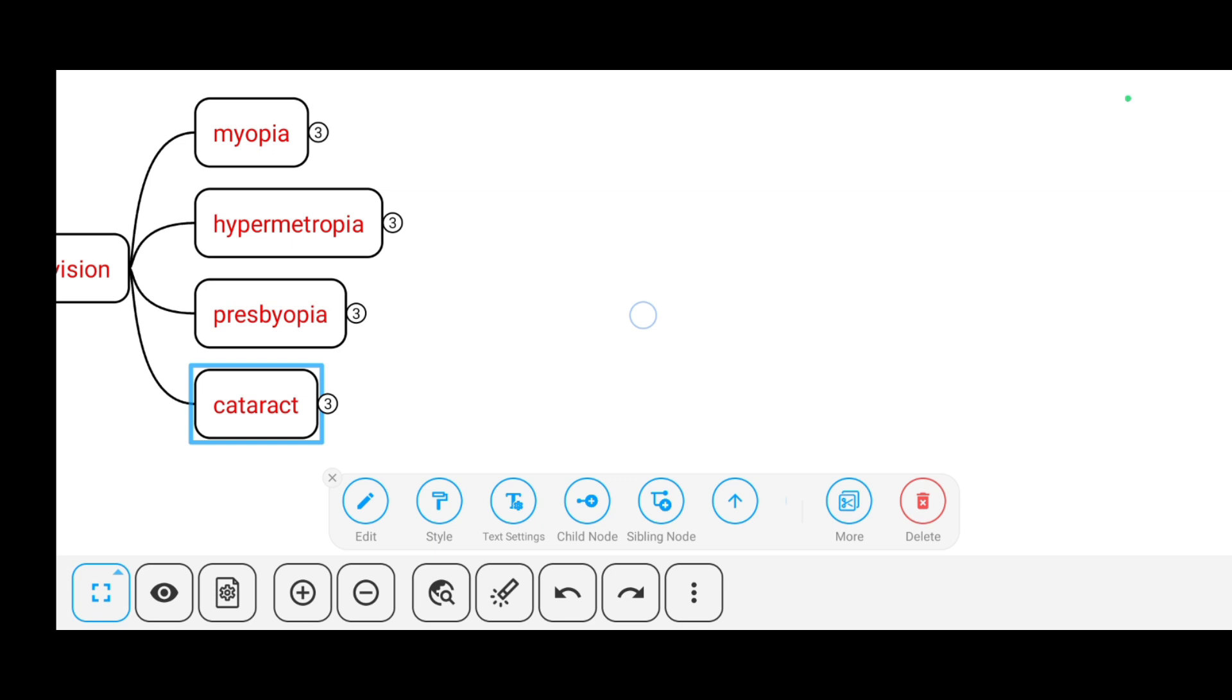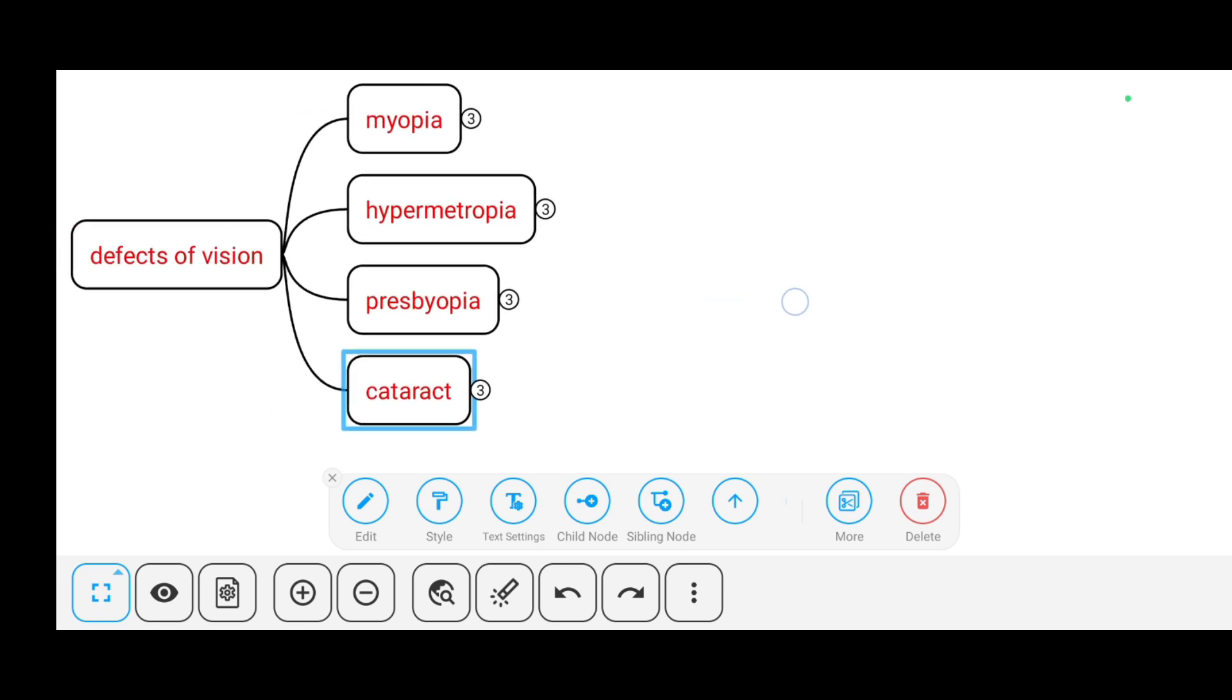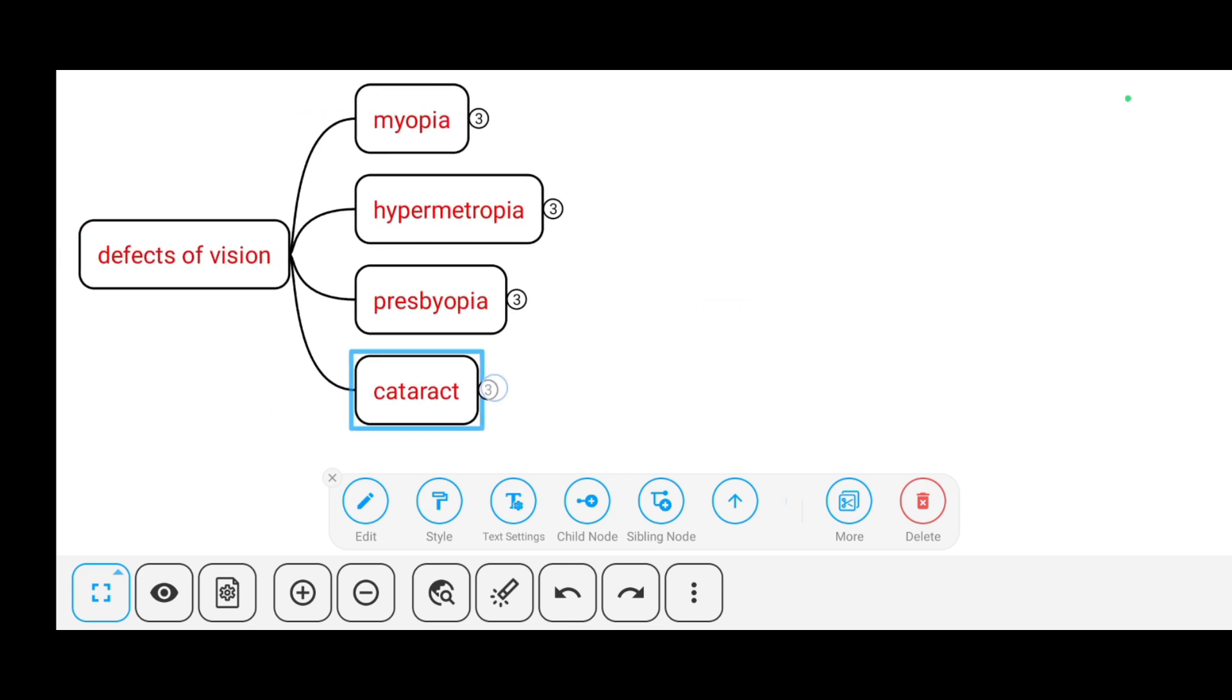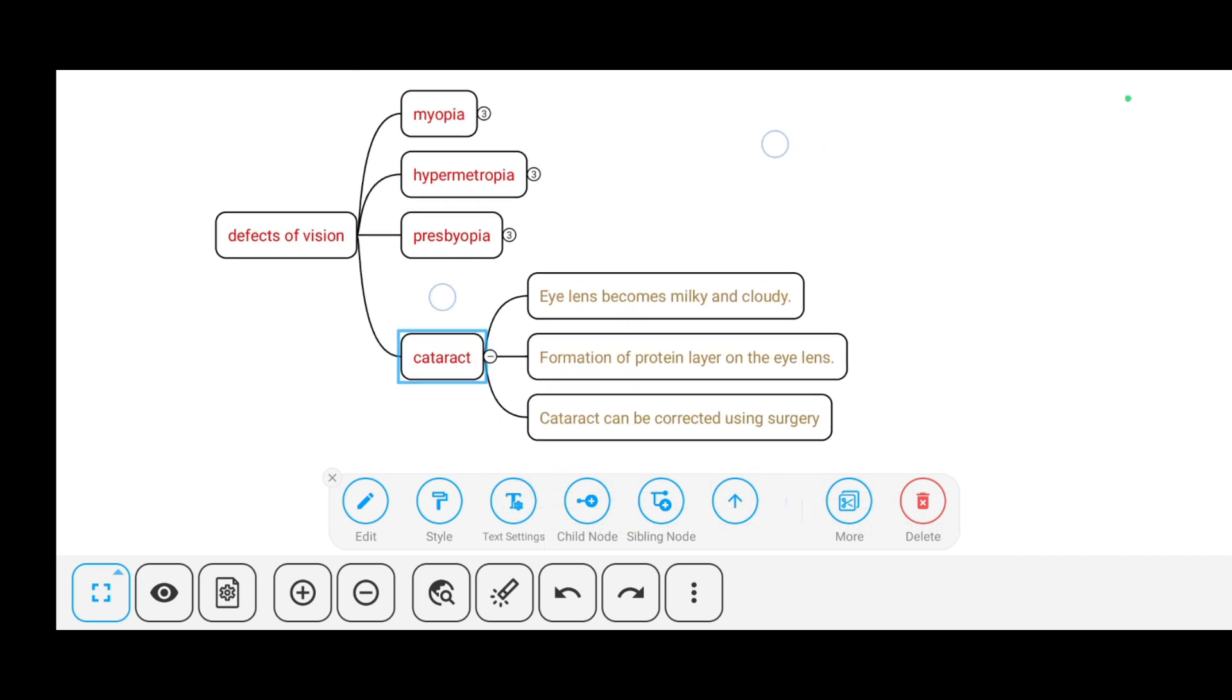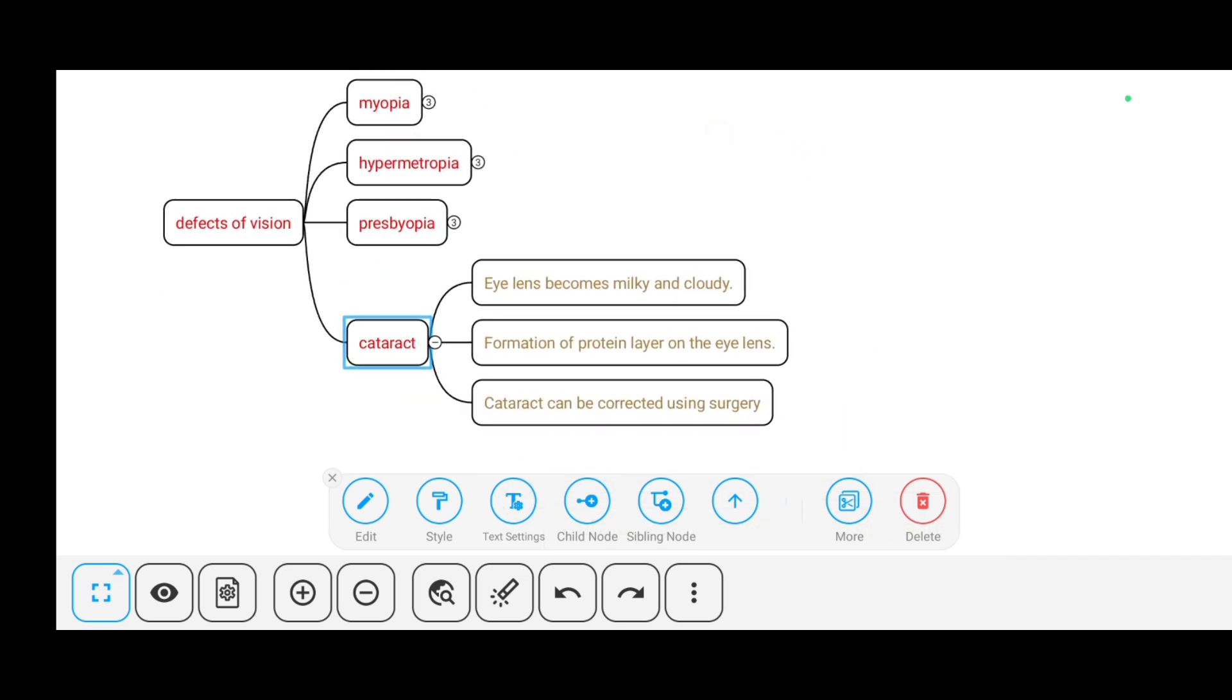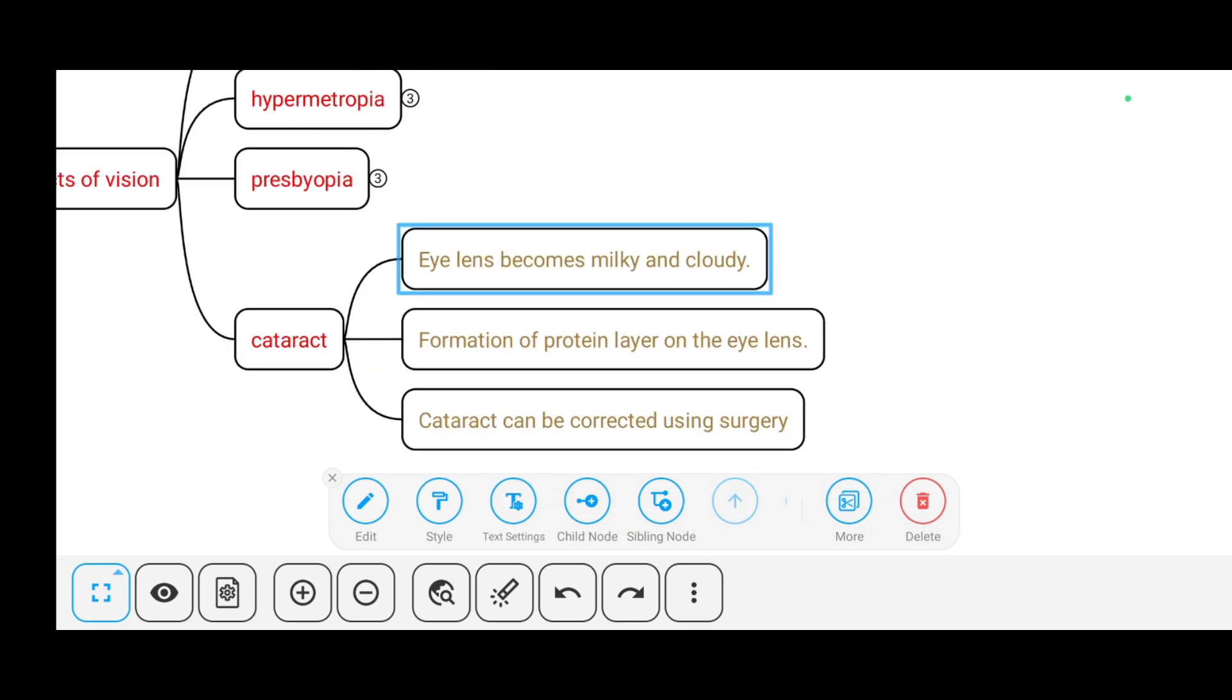Now the last defect is cataract. What is cataract? For a person suffering from cataract, the eye lens becomes milky and cloudy. The reason is formation of a protein layer on the eye lens. How can we correct cataract? With the help of surgery.